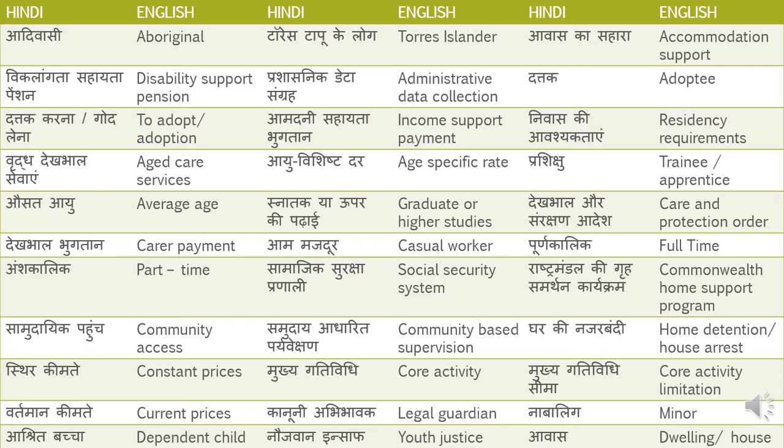Sthir keemte — Constant Prices. Mukhyagativiti — Core Activity. Mukhyagativiti seema — Core Activity Limitation. Aapke is karobar ki mukhyagativiti kya hai — that is 'What is the core activity of your business?' Vartaman keemte — Current Prices.